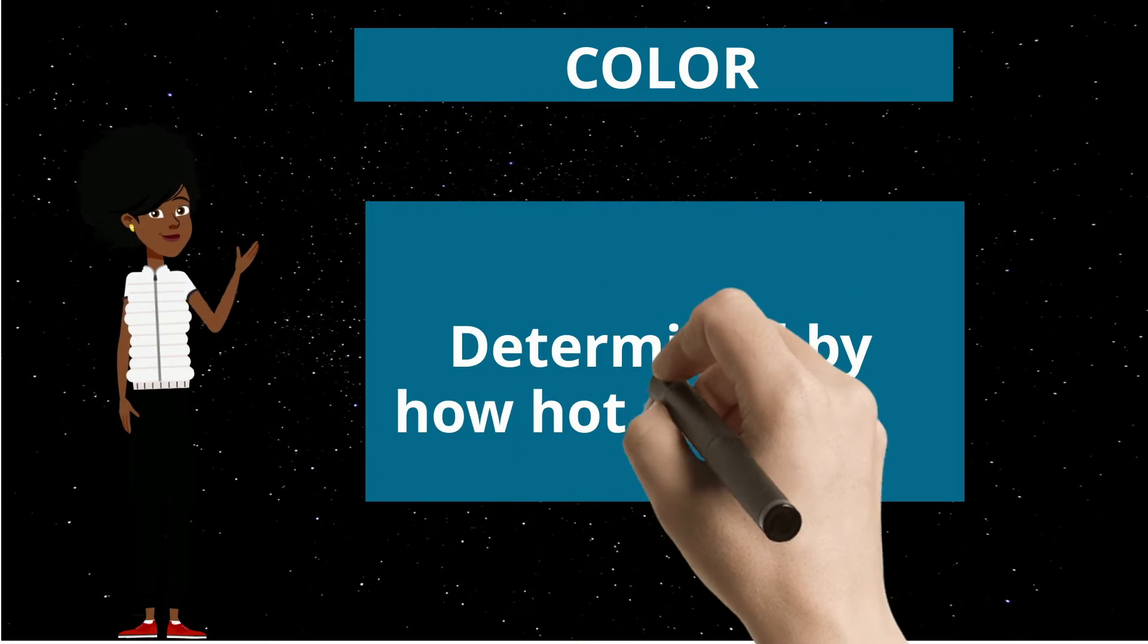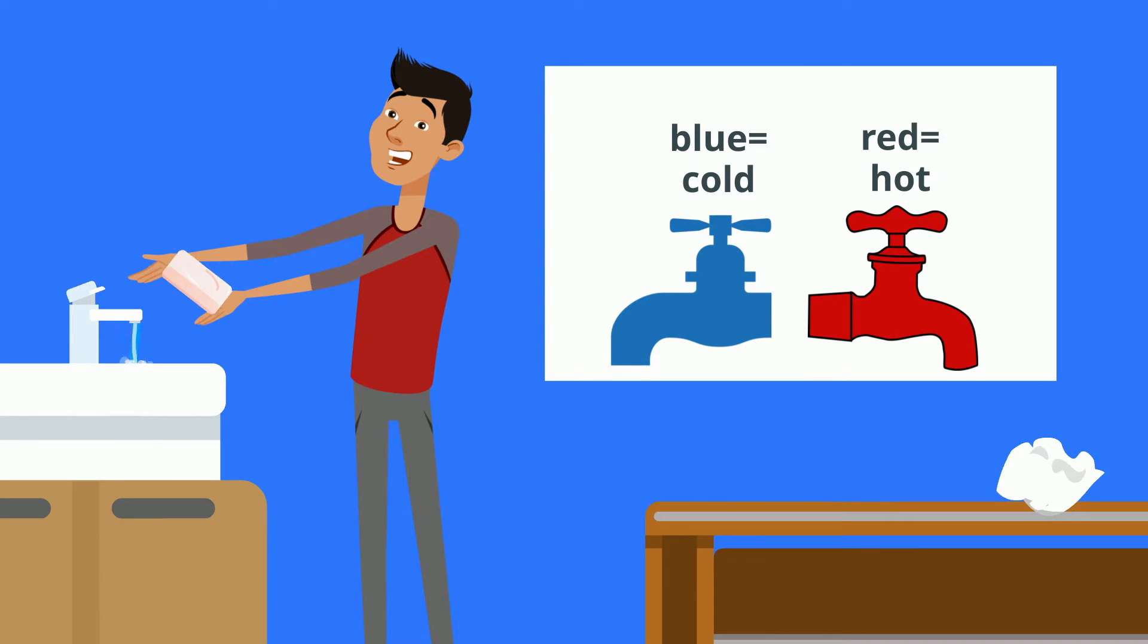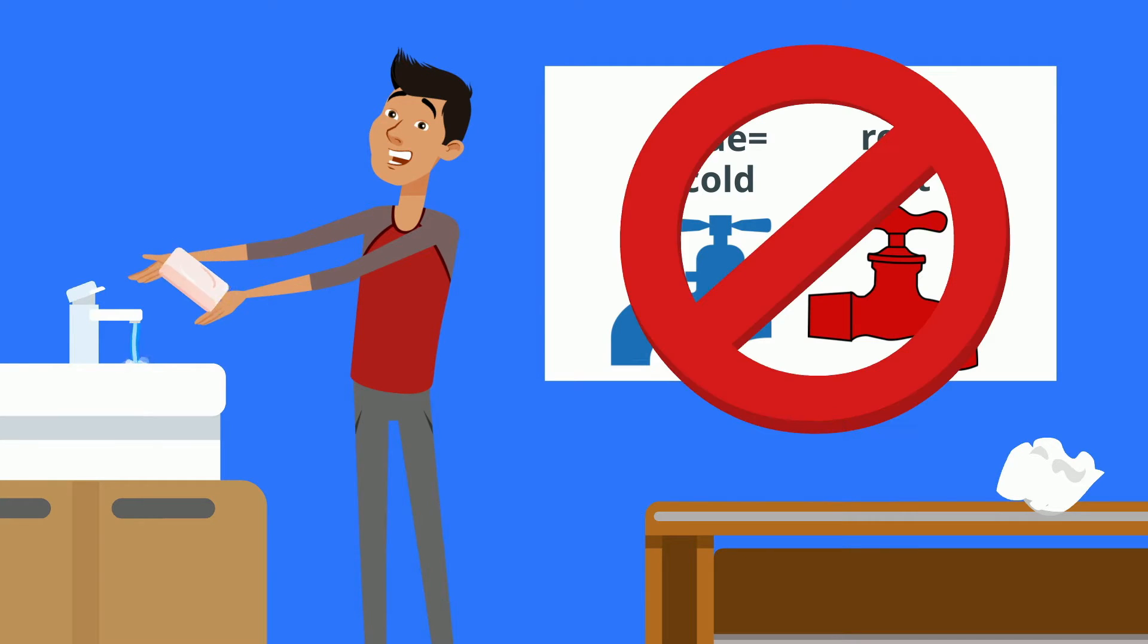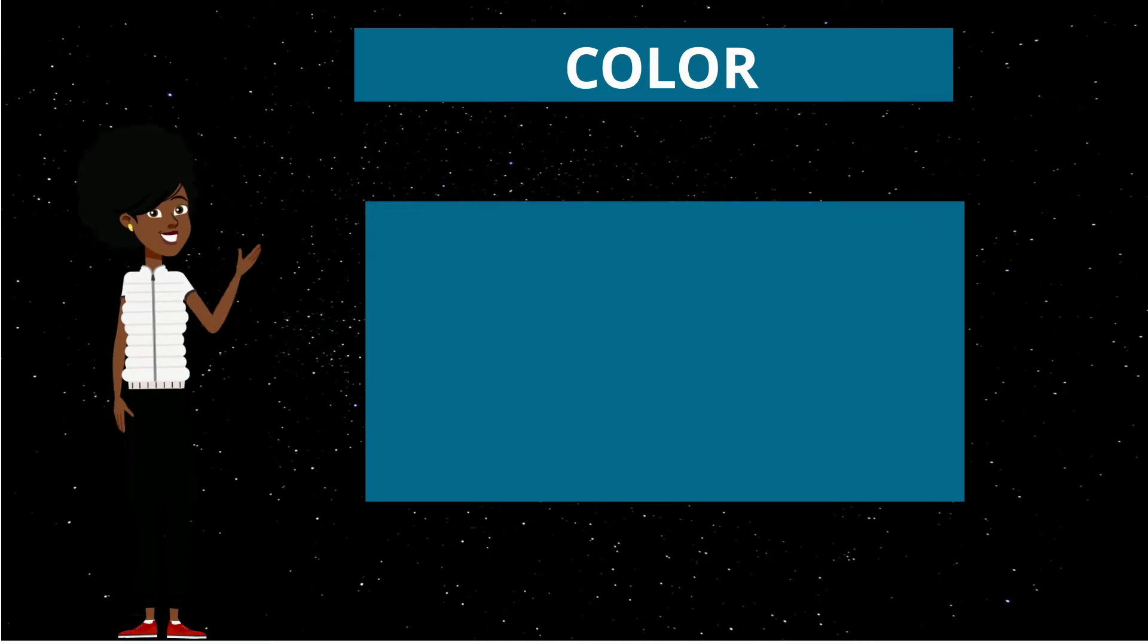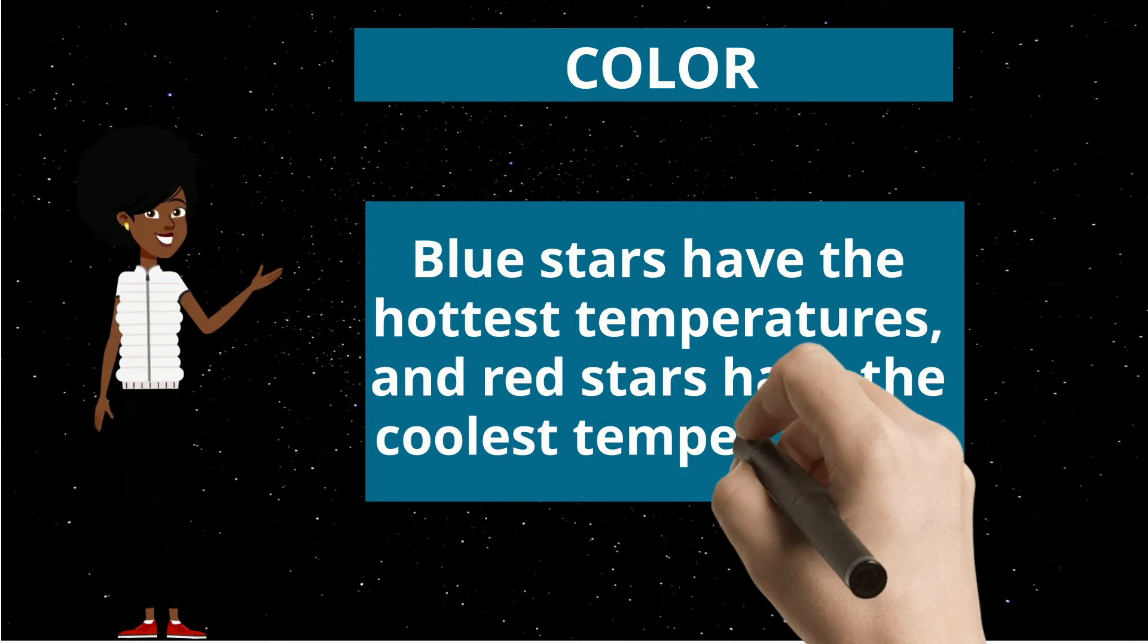It's determined by how hot the star is. Now, when you were young, you learned that blue equals cold and red equals hot. But that's not the case with stars. Blue stars have the hottest temperatures and red stars have the coolest temperatures.